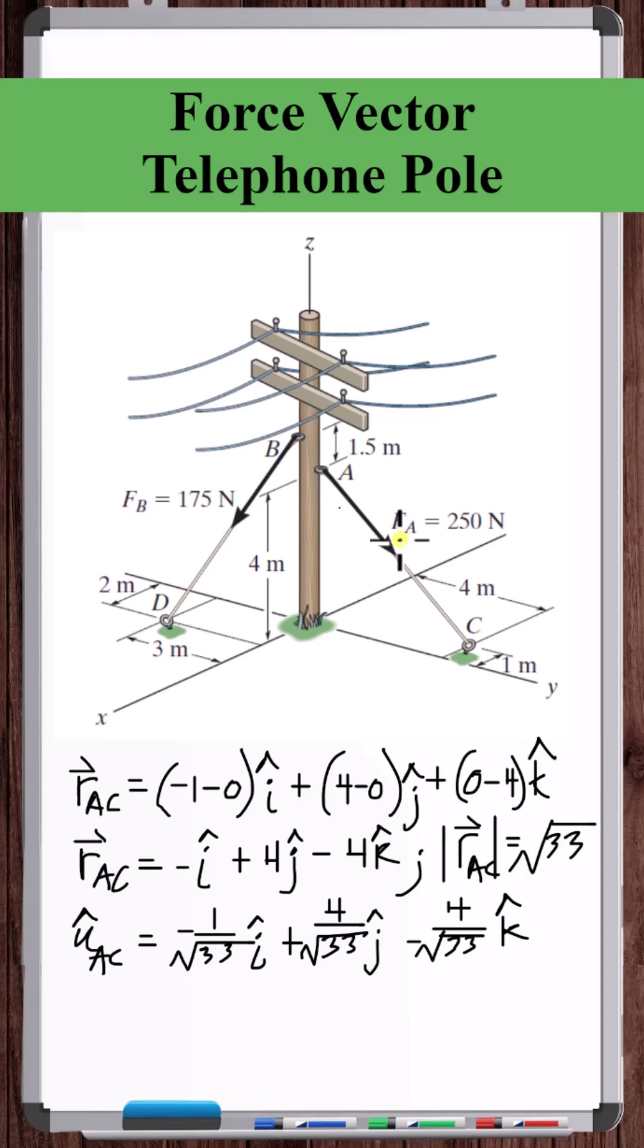Now to get the force vector FA, we just multiply the magnitude of FA, 250, by the unit vector in direction A, C. And that's the force vector in cable A-C.